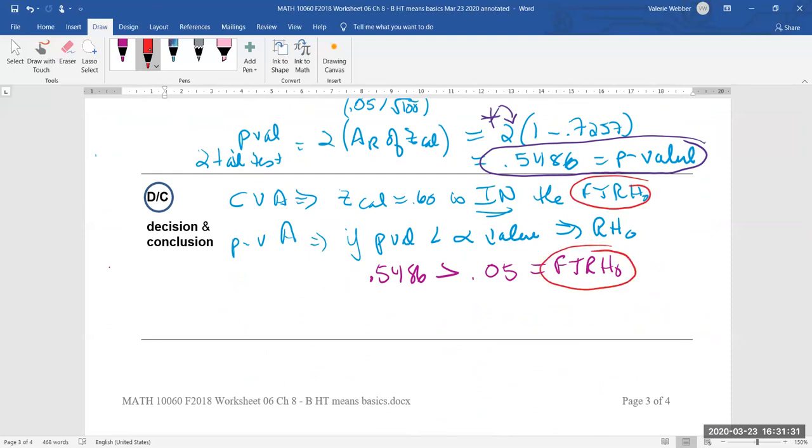And again, I'm just going to read out the conclusion statement because my writing is very messy on this. At the 5% level of significance, or you could say at the 95% confidence level, there is not enough evidence to reject H₀. It appears the shipment is fine to be sent out. And that's our second example. Thank you.